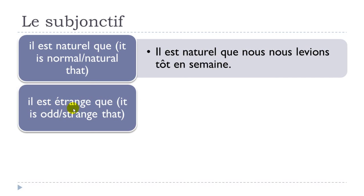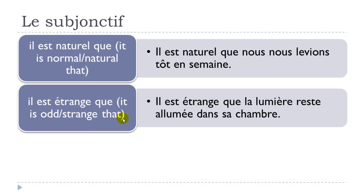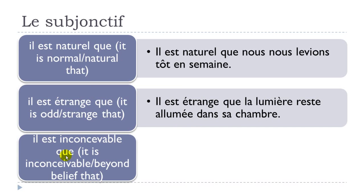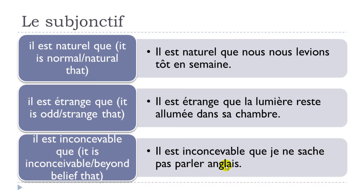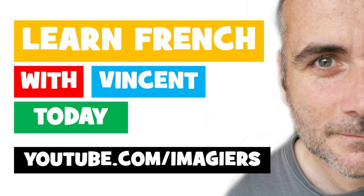Il est étrange que — it is odd, strange, that — il est étrange que la lumière reste allumée dans sa chambre. Il est inconcevable que — it is inconceivable, beyond belief, that — il est inconcevable que je ne sache pas parler anglais. Il est inconcevable, sans doute, que je ne sache pas parler anglais.